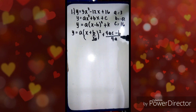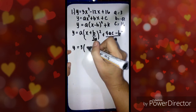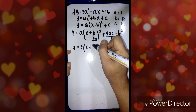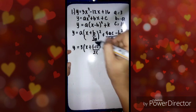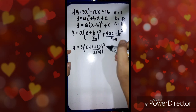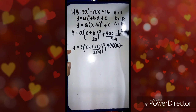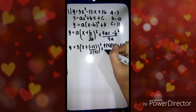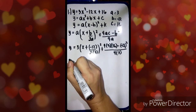All we have to do is substitute the given values into the formula. So now we have y equals — a is 3 — times the quantity of x plus, our b is negative 12, so we write negative 12 over 2 times a which is 3, and then square, plus 4 times a times c, minus b squared over 4a where a is 3.